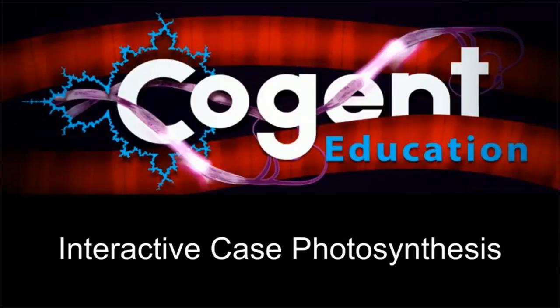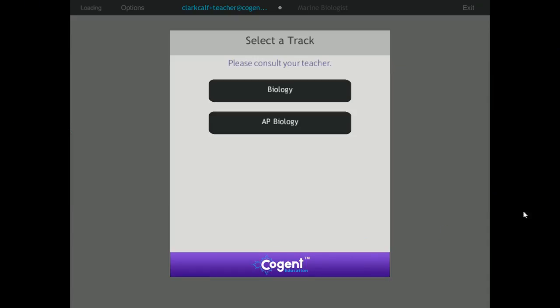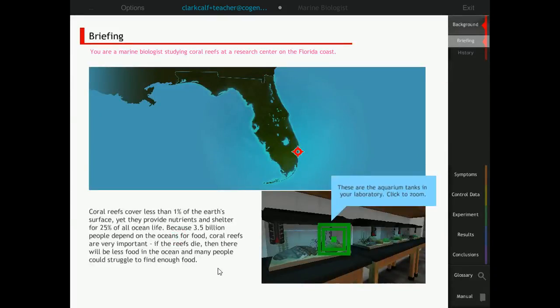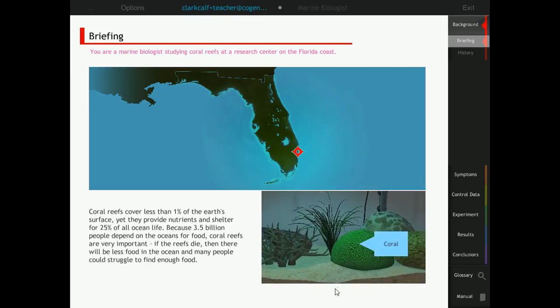Welcome to Cogent Education's interactive case on photosynthesis. This case includes two tracks for both AP and intro level students and may take one to one and a half hours. Teachers are able to track their students' progress in real time through interactive questions.